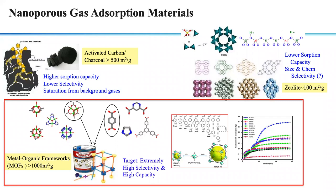Another class of materials are zeolites — aluminosilicate crystalline porous materials. There are about 200 known frameworks based on thermodynamic favorability. They are highly crystalline, and because they are aluminosilicates, they have a charge. Between the size and shape, you can get certain selectivities. They have a lower absorption capacity because of the small pores, but are highly thermally, chemically, and radiologically stable and also size- and chemically selective. Generally they are about 100 meters squared per gram.